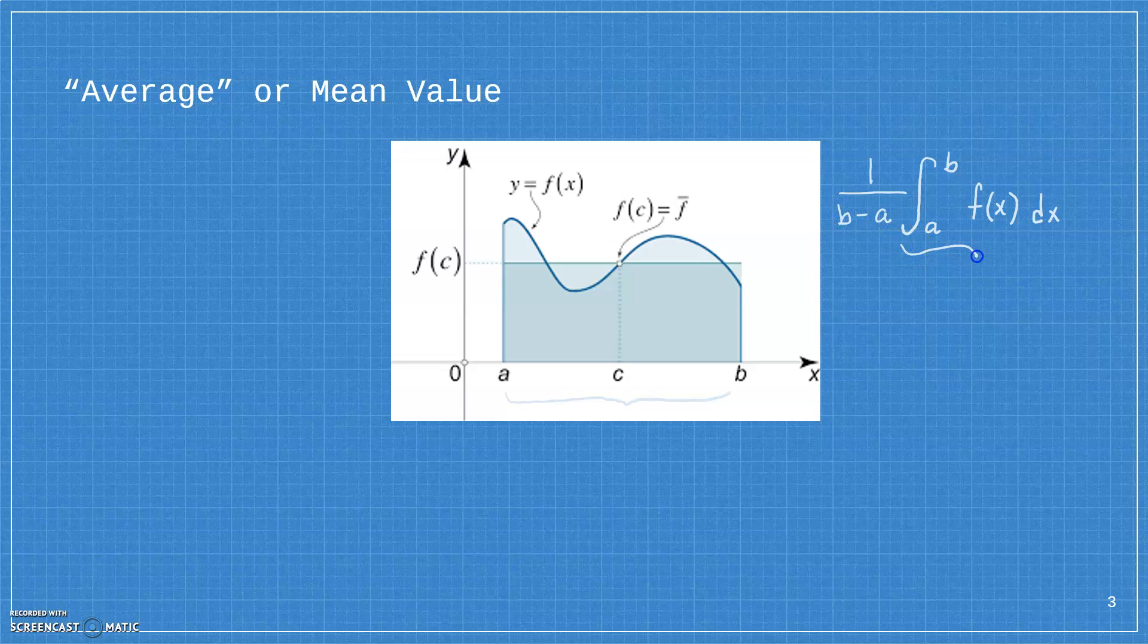So remember, this part gives us the area, and this part says we're going to divide by the width. And what we're left with is the average height along that interval. And so the average value of the function is this formula, the integral divided by the width of the interval.